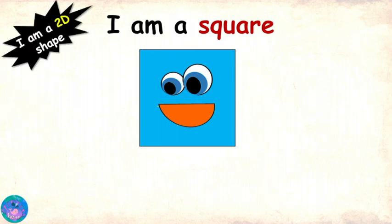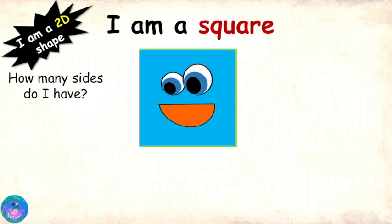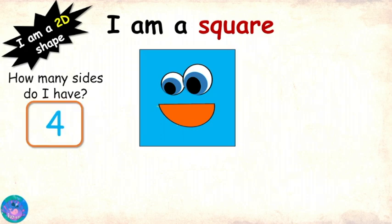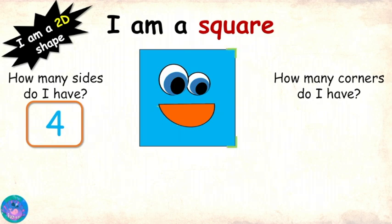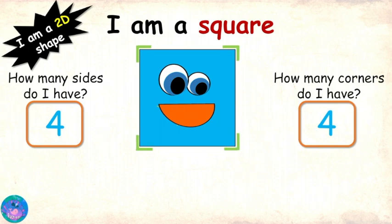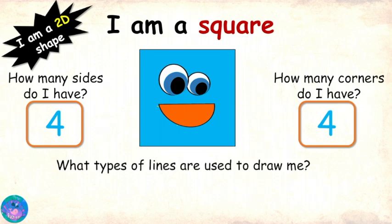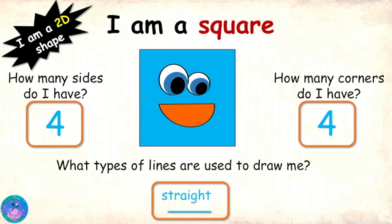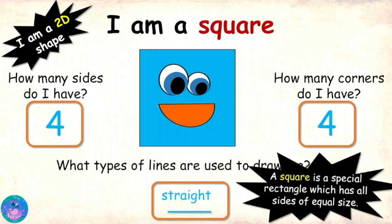Hello! I am a square. I am a 2D shape. How many sides do I have? 1, 2, 3, and 4. And it looks like all your sides are of the same size. That is right. How many corners do I have? 1, 2, 3, 4 corners. And you have L-shaped corners as well. That is right. What type of lines do I use to draw me? Straight or curved? Straight lines! So, a square is a special rectangle that has all sides of the same size. Very good, Zoe!